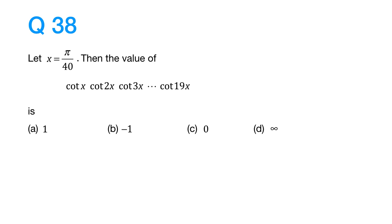cot 2x, cot 3x, right up to cot 19x. How do we do this question?